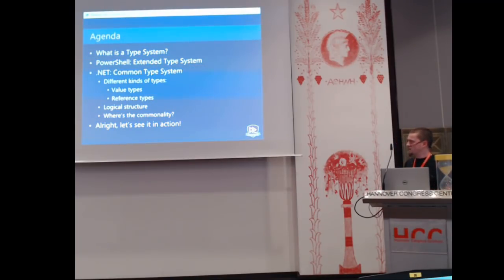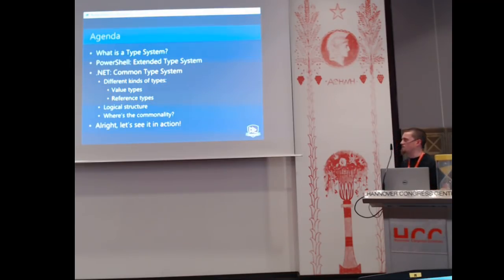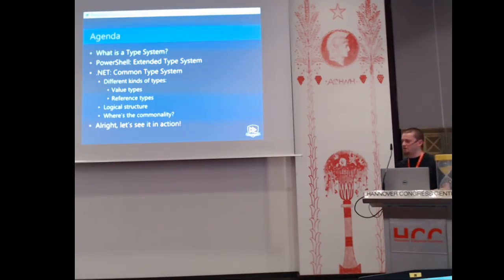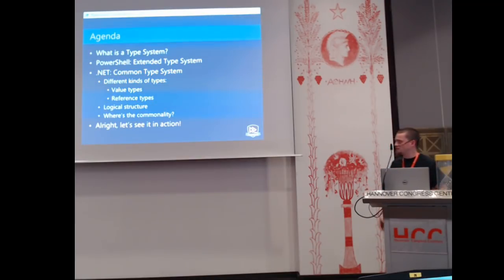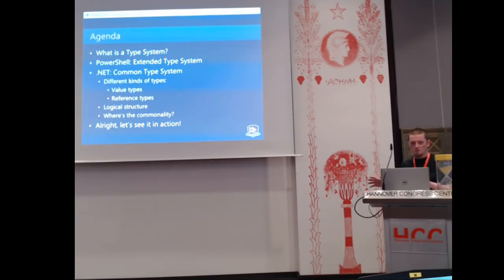We're going to delve into the building blocks of the .NET common type system — there are a bunch of different types that come built in. What is the logical structure of the files and code we use to define these types? Then we'll look at where the 'common' part of the common type system actually kicks in — why it's useful and designed the way it is. And at the end, we'll see a little bit of it in action with a few demos.